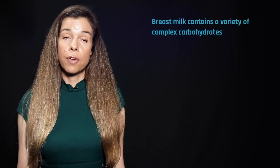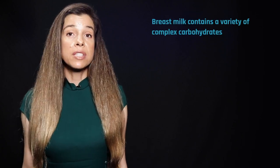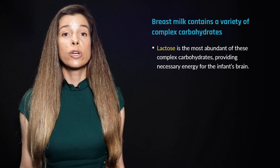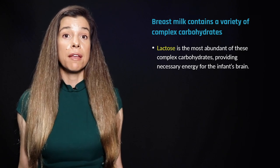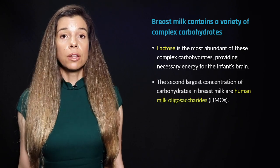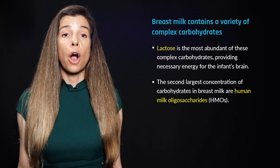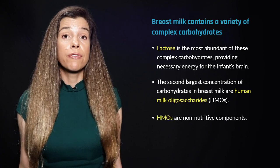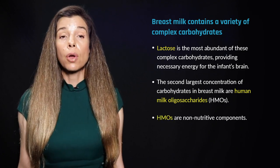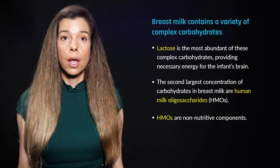Breast milk contains a variety of complex carbohydrates, the most abundant of which is lactose, which provides necessary energy for the infant's brain. The second largest concentration of carbohydrates in human breast milk are non-nutritive components called human milk oligosaccharides, or HMOs for short.